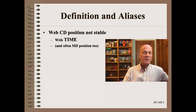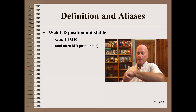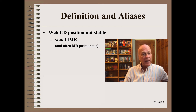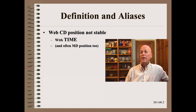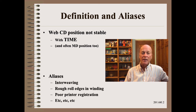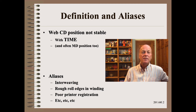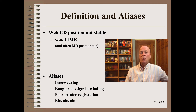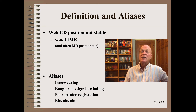We will define path control problems as when the web cross-direction (CD) position is not stable with time. In many cases the web CD position is also not stable with machine direction (MD) position. Your operator or quality control department will not necessarily call these path control problems — they are more likely to use rejectable defect names such as roll interweaving, rough roll edges on wound rolls, or poor color-to-color registration on printers. These examples are all path control problems that are sometimes easier to diagnose as path control problems than by using a narrower specific defect focus.